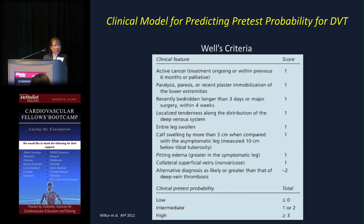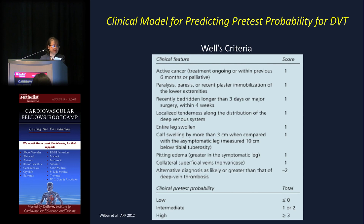There are several models for predicting DVT, and the Wells criteria is the one used most often and has been extensively validated. The scoring system includes presence of active cancer, paralysis, recent immobilization, and various physical exam features from local tenderness to swelling compared to the asymptomatic leg. Low risk is a score of zero, intermediate is one to two, and high is greater than three.